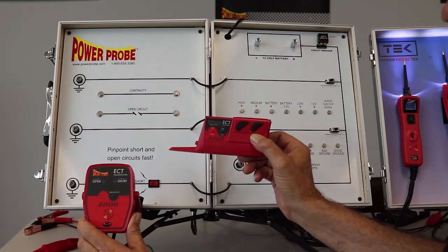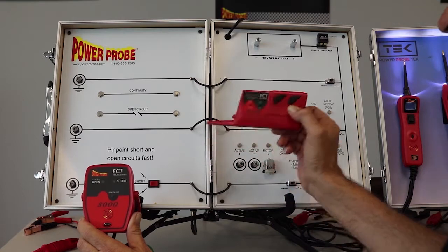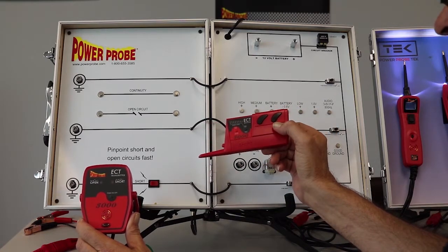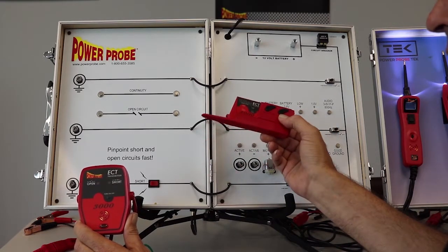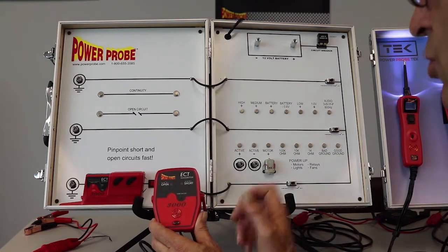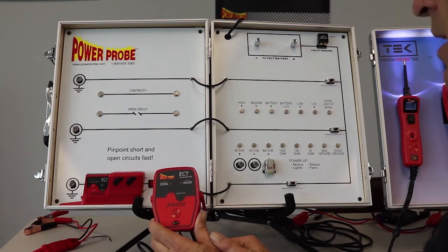The goal of this tool is to locate shorts or broken wires in the vehicle before you begin tearing the car apart. Tracking down shorts and broken wires can be a technician's worst nightmare.